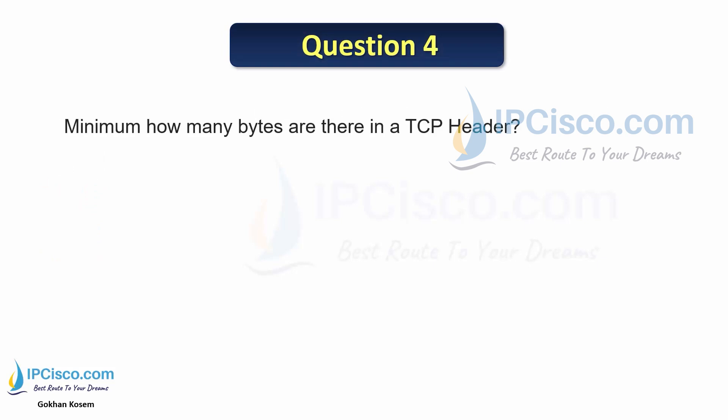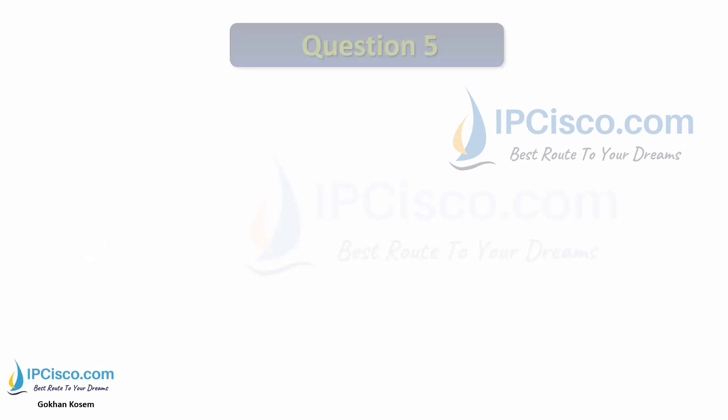Question 4: What is the minimum number of bytes in a TCP header? The options are 5, 10, 20, 40, or 60. The answer is TCP header has 20 bytes by default.